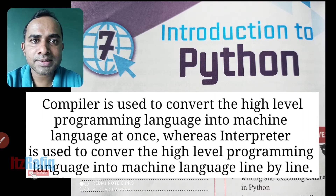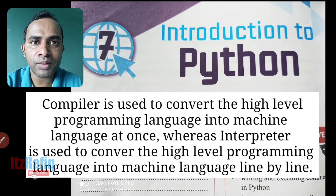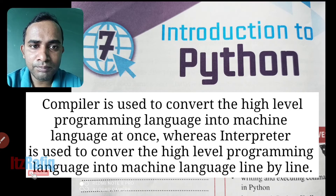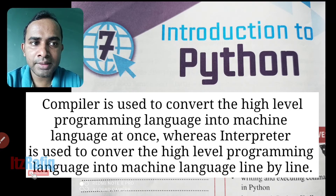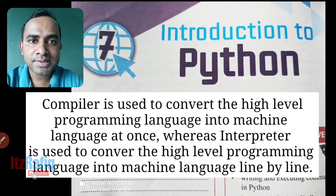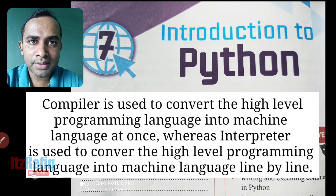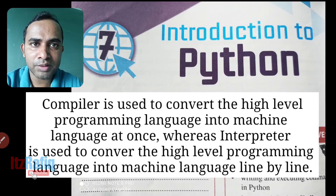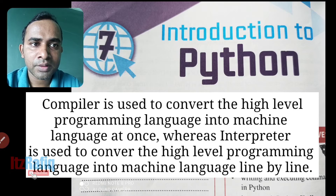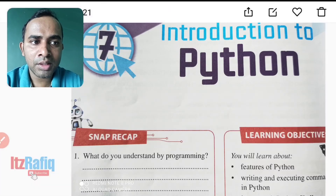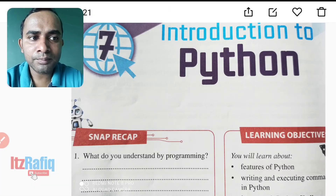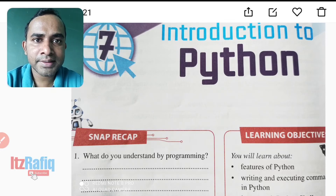When you are translating a program into machine language using a compiler, your whole program is compiled in advance. But if you are translating your program using an interpreter, it translates line by line. Python is called an interpreter-based programming language because when we translate a Python program, it converts line by line.